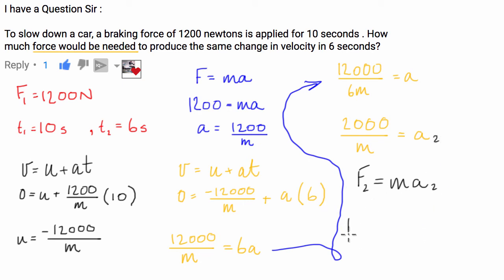So therefore, F2 is going to be the mass times the acceleration, which we just solved. Now, notice because the mass of the car isn't going to change, they will cancel out. They are effectively the same number.